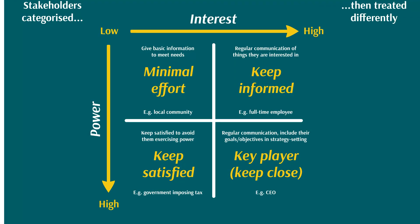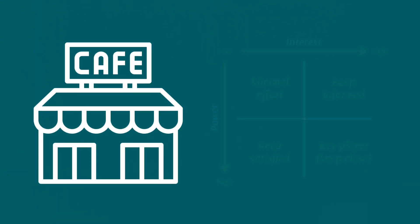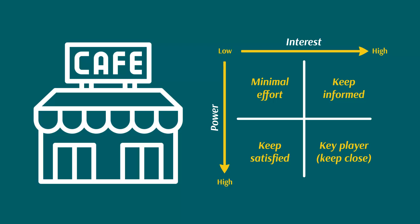That covers Mendelow's Matrix and the four classifications. Remember, the stakeholders used as examples are broad outlines — in reality they depend on the industry and the type of company. For example, full-time employees who are unionized would move up the power axis. Let's now look at a practical example using Bob and his local chain of cafes and Bob's own Mendelow's Matrix.